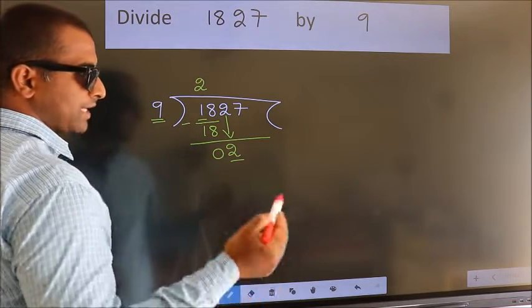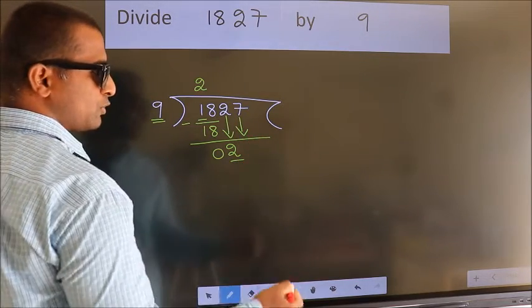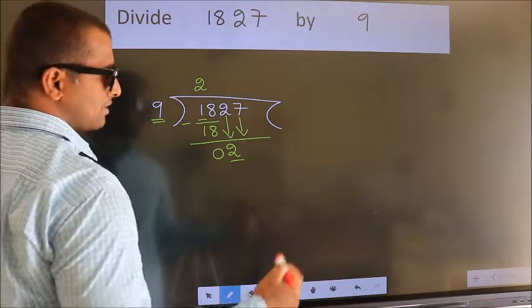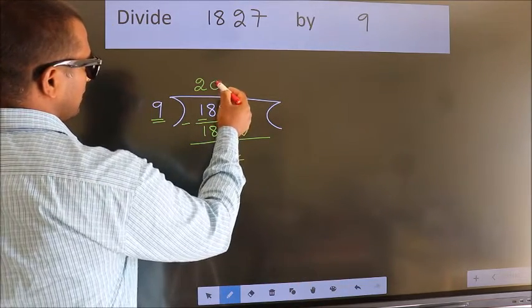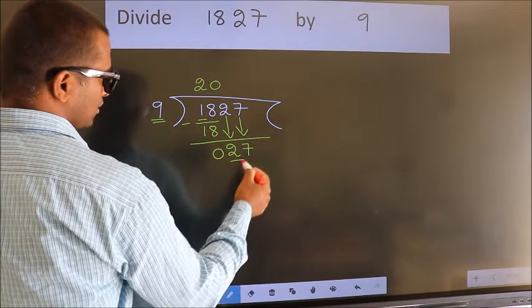So we should bring down the second number. And the rule to bring down the second number is put 0 here. Then only we can bring down this number. So 27.